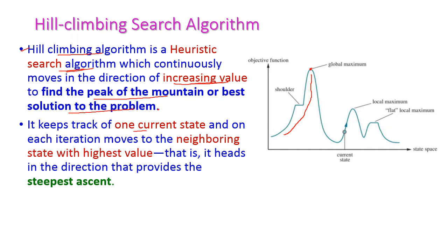It keeps track of one current state on each iteration. For each iteration, it moves to the neighboring state with the highest value. For example, this is a node, and in each iteration the neighbors will be searched and whichever neighboring value is highest than the current node, then the current node will be changed to this new neighbor. After that, it keeps on checking the current node, moving until it reaches the highest value among all the other nodes.